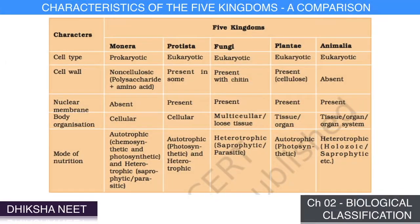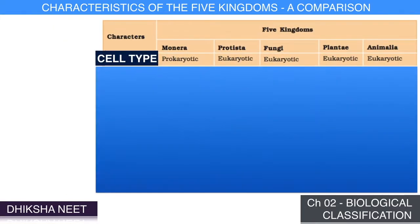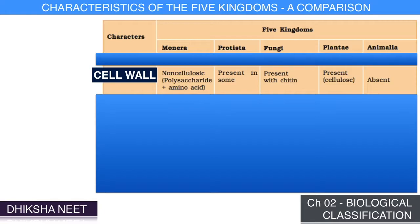The table here gives you a snapshot of the comparison. Cell type: the cell type of all organisms under kingdom Monera is prokaryotic, while in the other four kingdoms — Protista, Fungi, Plantae, and Animalia — it is eukaryotic. Cell wall: in kingdom Monera, cell wall is present and it is non-cellulosic, made of polysaccharide and amino acid.